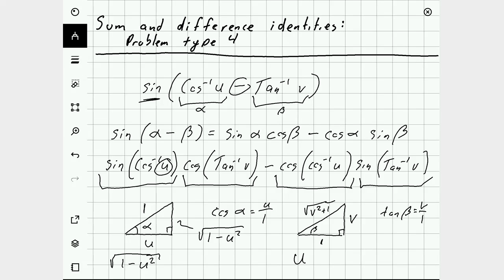Using that triangle to calculate the cosine is going to be the adjacent side, which is 1, over the hypotenuse, which is the square root of v squared plus 1.